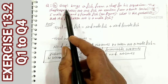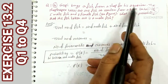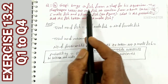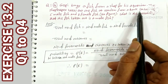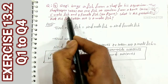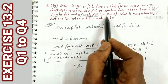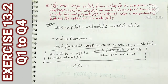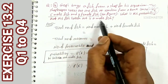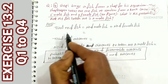Question number 4: Gopi buys a fish from a shop for his aquarium. The shopkeeper takes out one fish at random from a tank containing 5 male fish and 8 female fish. What is the probability that the fish taken out is a male fish? Total fish in the tank: 5 plus 8 = 13.